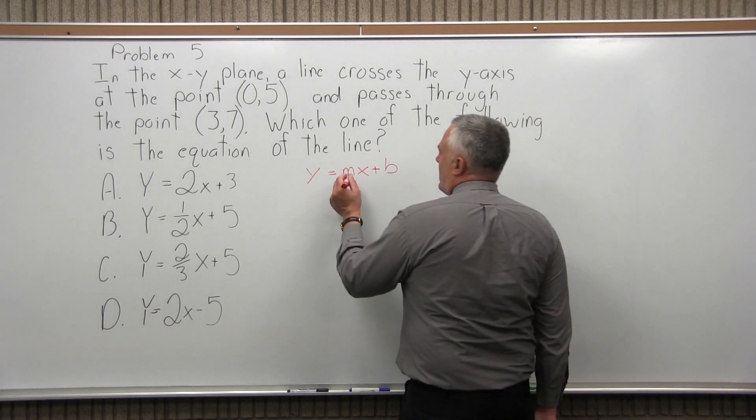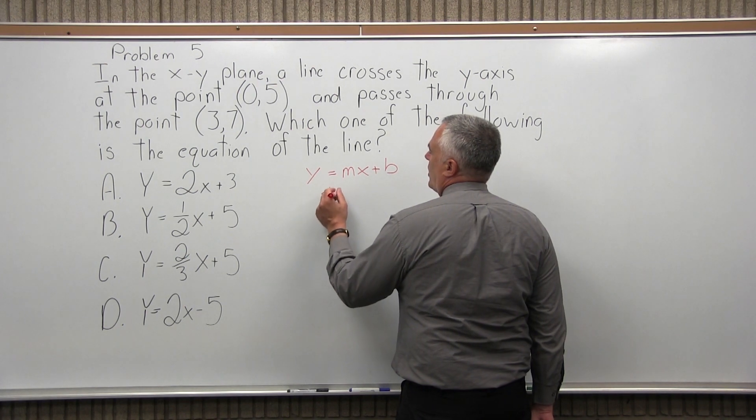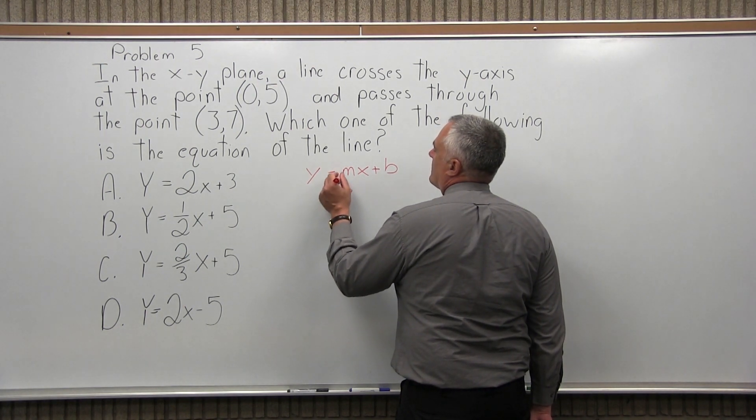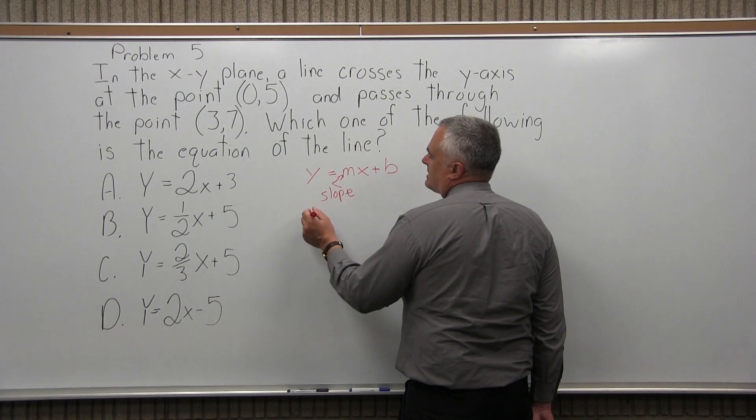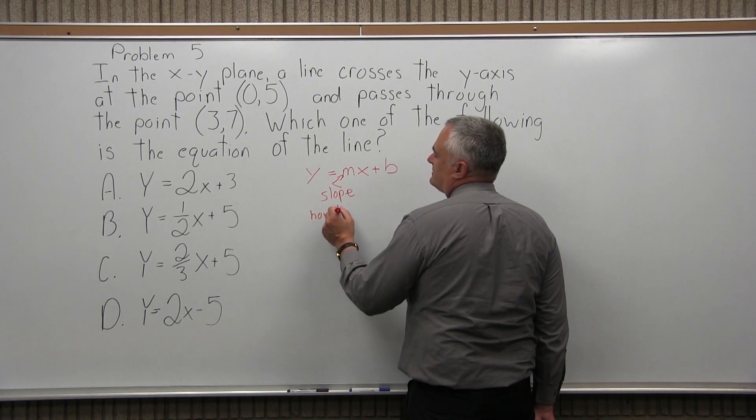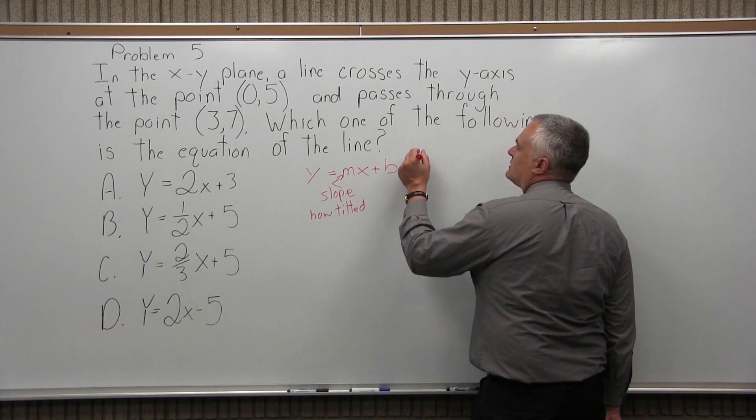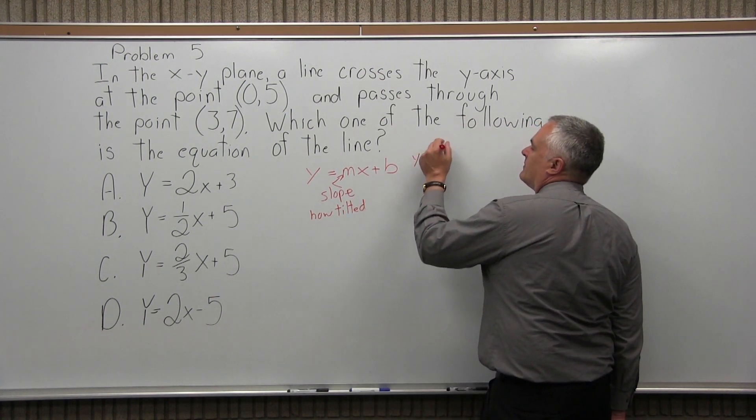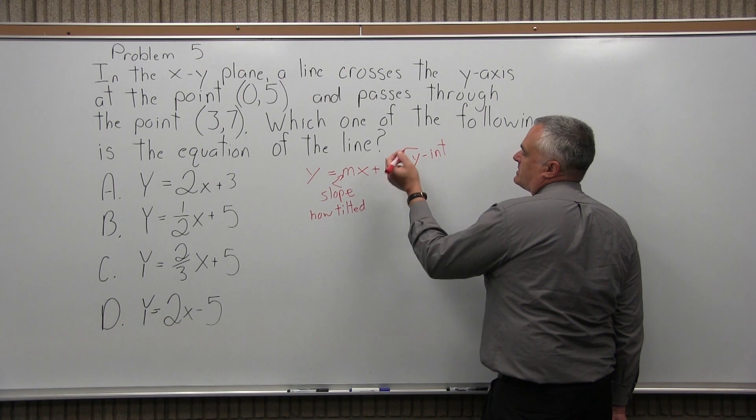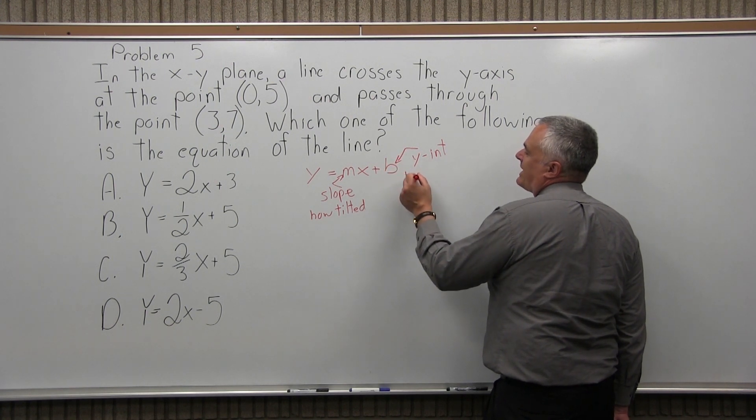So the m stands for slope, and that is basically how tilted the line is. b stands for y-intercept, which is essentially where the line crosses the y-axis.